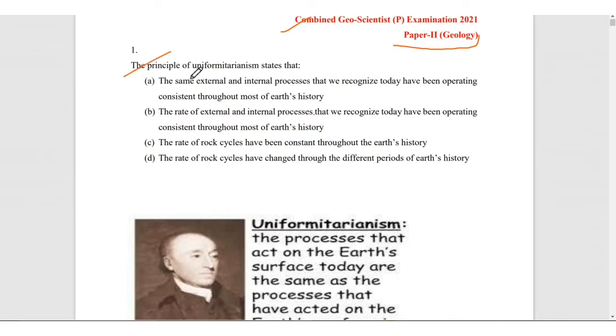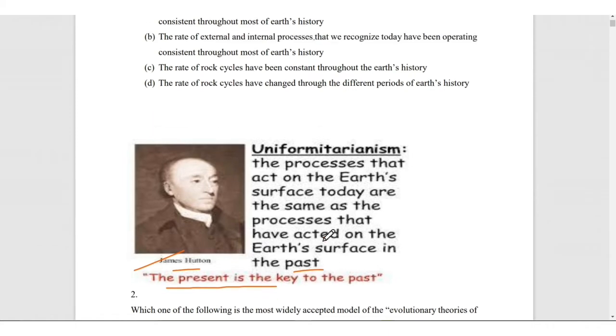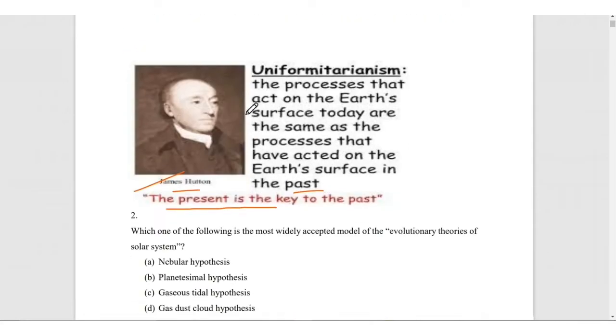The first question is the principle of uniformitarianism states that. Let us see who gave this principle. James Hutton was the one who gave this principle. He said the present is the key to the past, which means that the processes that act on earth's surface today are same as the processes that have acted on the earth's surface in the past. The answer is the first option: the same external and internal processes that we recognize today have been operating consistently throughout most of the earth's history.